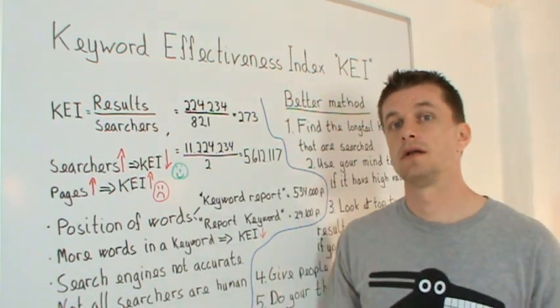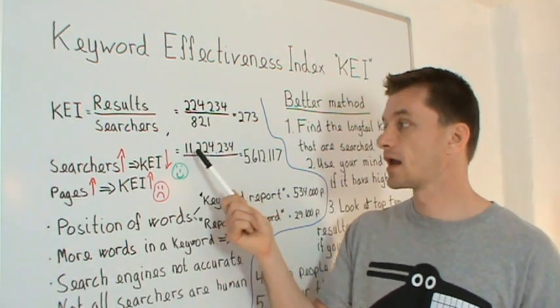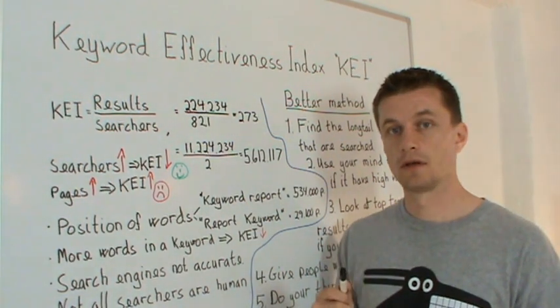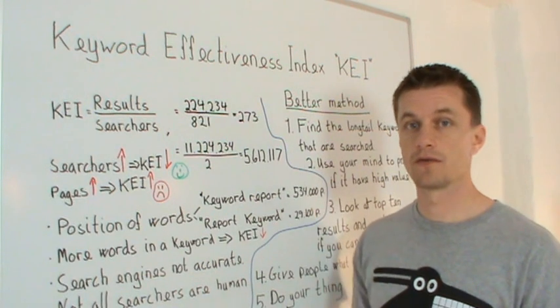Let's look at more realistic numbers and that would be something like 11 million something and two searches a month. And let's give the KEI on 5,600,000.